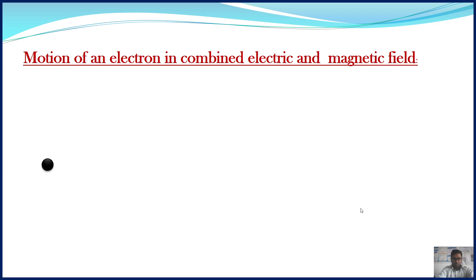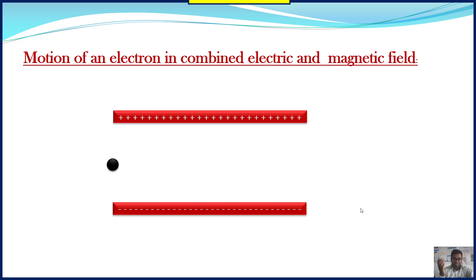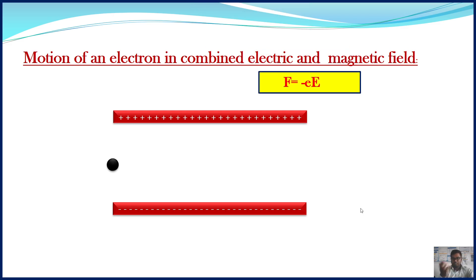Consider an electron shown by the black solid sphere. Consider two metal plates — one metal plate is positively charged, the second metal plate is negatively charged. So, electric field is developed between these two plates and the direction of electric field will be vertically downward. As the electron enters into the region of electric field, the electric field exerts a force on that electron and the force is given as F equals minus eE. Due to this electric force, the direction of motion of an electron will change.